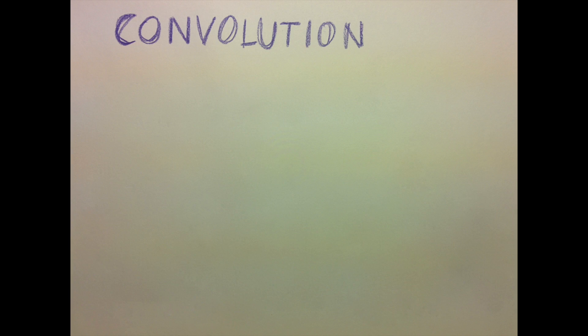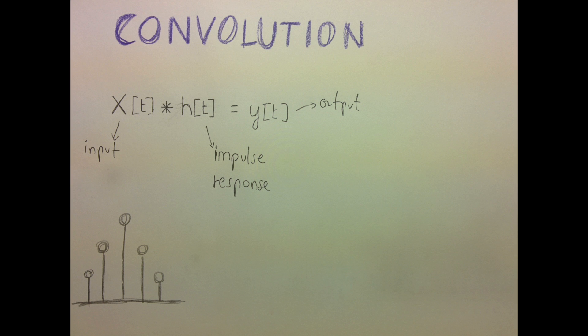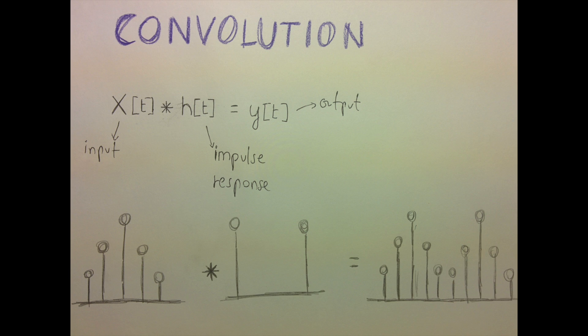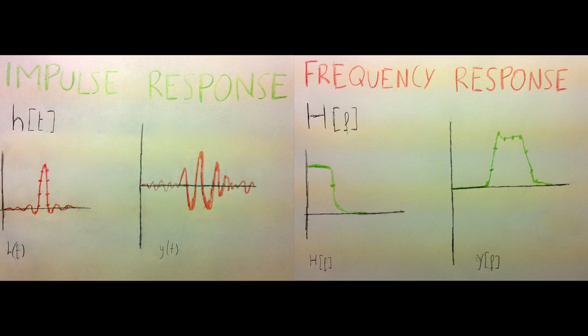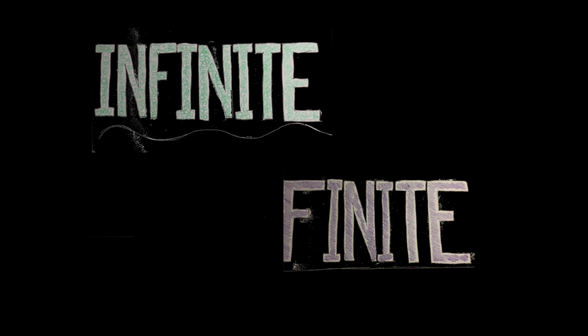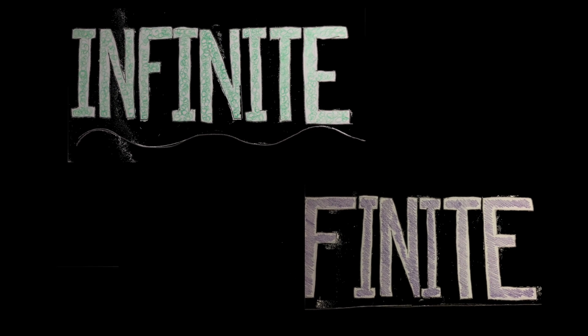Convolution's a math operation, like summing or multiplication — takes two things and makes a third. Here is the signal preferred; it's a part of our digital filtration. We'll spare you the math for a time; it's boring to make numbers rhyme. But we have here two types — endless and finite — they're filters you must recognize.